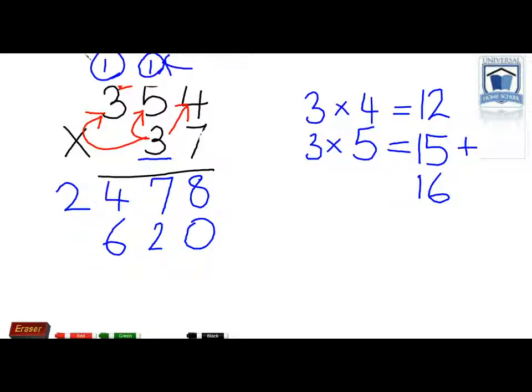Then finally we multiply 3 times 3 which would equal 9 plus the 1 would equal 10. So we put the 0 down and we put the 1 beside it.